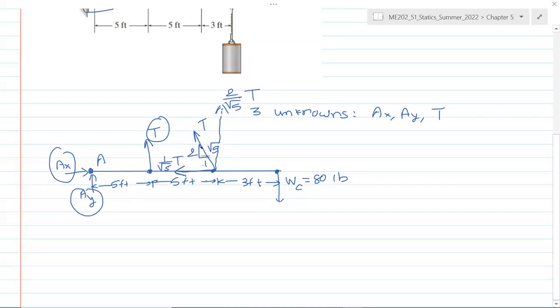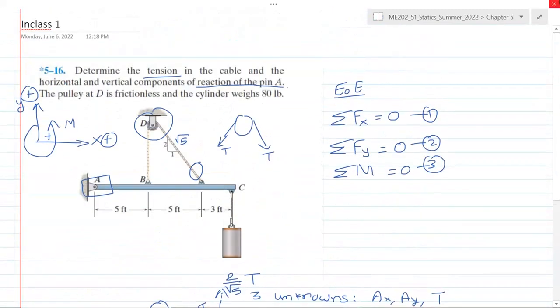Now instead of this force here we have horizontal and vertical forces. We already have one horizontal force Ax and one vertical force Ay. If we apply either of these two equations we will not be able to solve for any one of the unknowns straightforward because we will have two unknowns in both of these equations. So we will start with sum of moments equation.